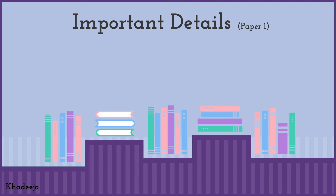Let's look at some important details about Paper One. The code for this paper is 4MB1/01. The code isn't essential to memorize to pass the exam, but you should be aware of it so you can double-check you're sitting the right paper. It's always good to know this before the actual exam.